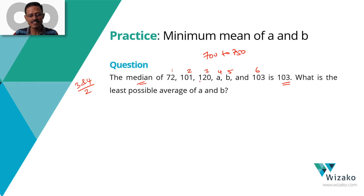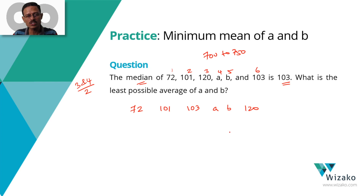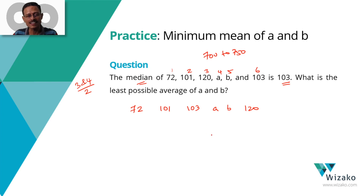Before we proceed, consider how the numbers are written: 72, 101, 120, then a, b, and 103. Do not be tempted to think a and b lie between 120 and 103 based on their position. Similarly, if the numbers were written as 72, 101, 103, a, b, 120 — do not assume a and b take values between 103 and 120. You cannot make that unwarranted assumption unless the question explicitly states the numbers are in ascending order.